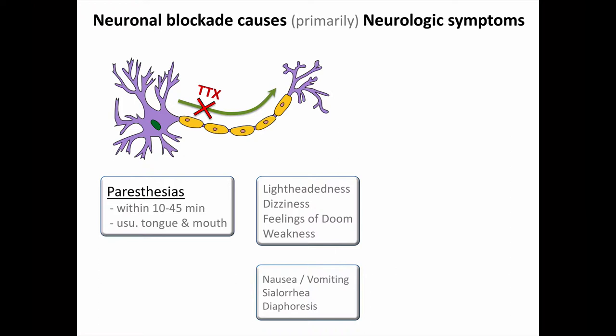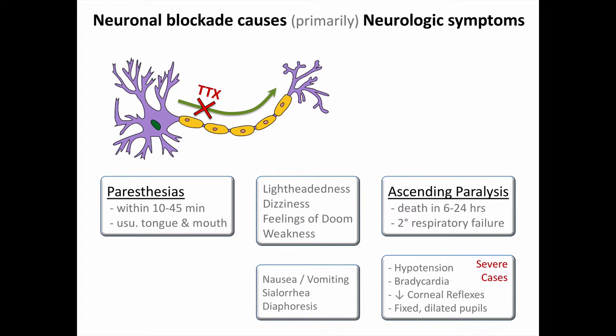While these signs might sound like they are cholinergically mediated, they aren't. And in the most severe cases, there is an ascending paralysis, and death can occur from respiratory failure. Severe cases may also have hypotension, bradycardia, and a loss of protective reflexes. There is no antidote, so treatment is entirely supportive, which may require endotracheal intubation and artificial ventilation in more severe cases.